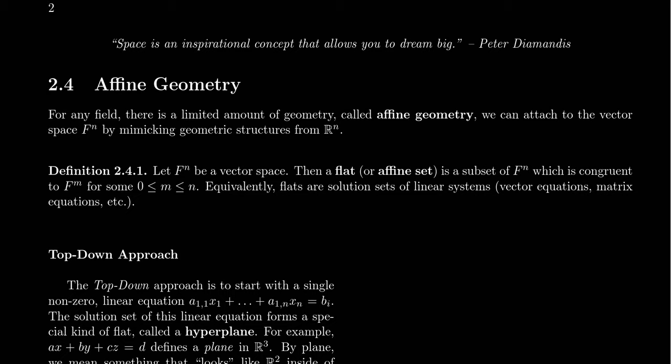And so in this section, I want to introduce the most primitive type of geometry which you can expect on a vector space. And this is referred to as affine geometry. In this lecture, we're going to talk about affine sets, or more simply, we're going to call them flats. And this is going to mimic the geometry we see in R^n when we talk about things like points, lines, planes, etc.